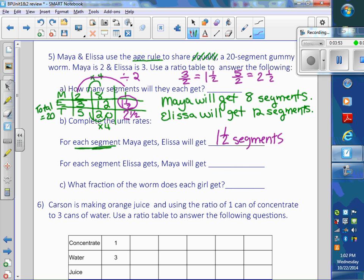And now we have to do the same idea, right, with Alyssa. Because now it says for each segment Alyssa gets, we want a 1 in Alyssa's column, or Alyssa's row. So I'm going to take Alyssa's 3 and divide by 3. So I have to divide Maya's 2 by 3, which is 2 thirds, because 2 divided by 3 is just 2 thirds. So for each segment Alyssa gets, Maya will get 2 thirds of a segment.